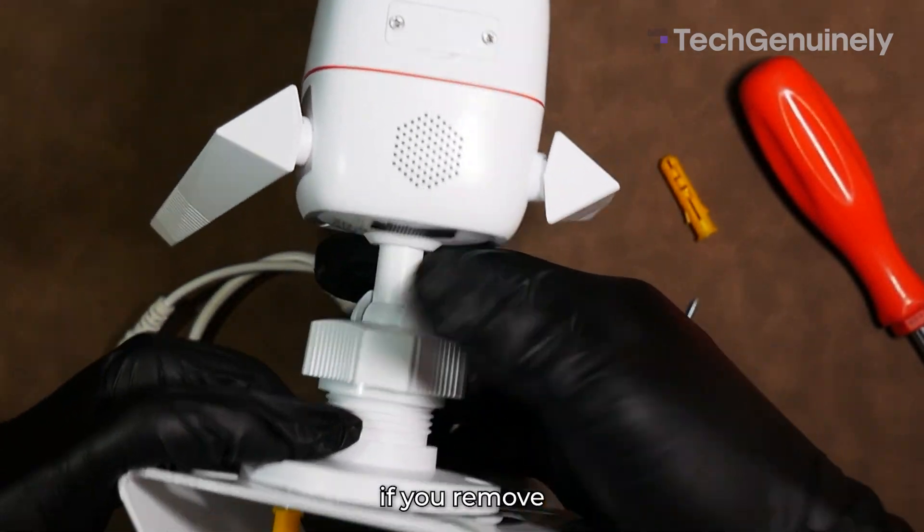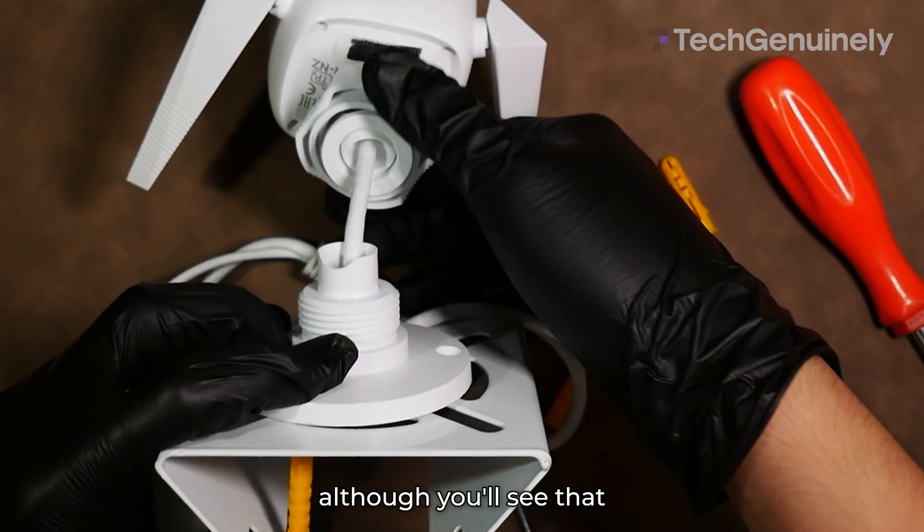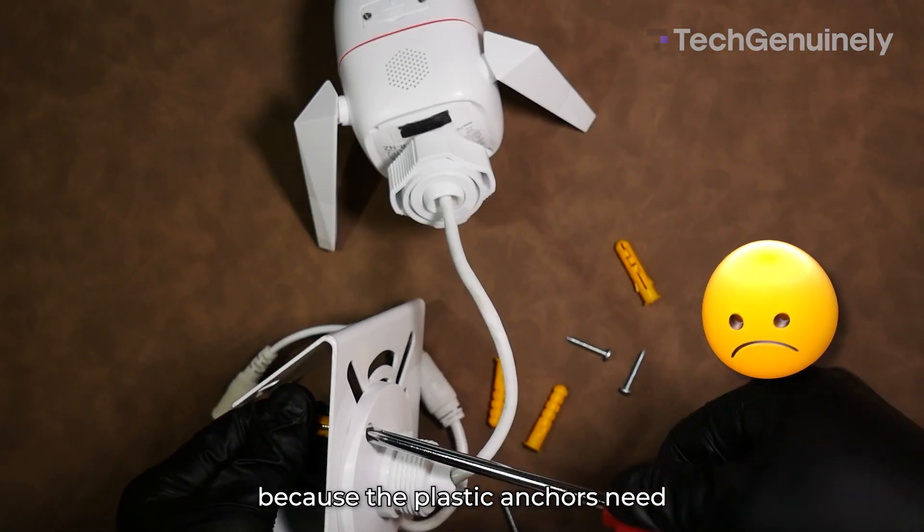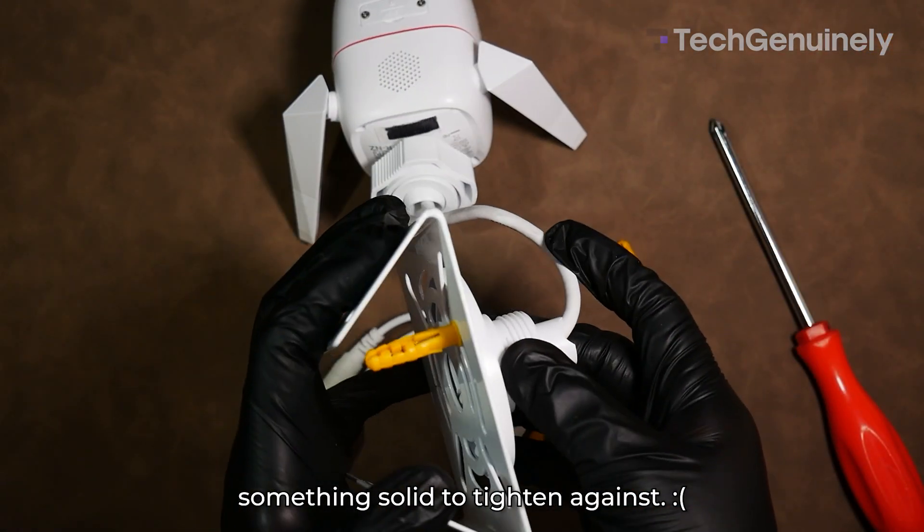Now we're going to try mounting it using the plastic screw anchors. It's easier if you remove the tightening collar first, although you'll see that it's not going to work out because the plastic anchors need something solid to tighten against.